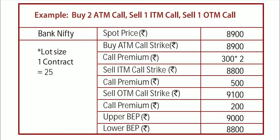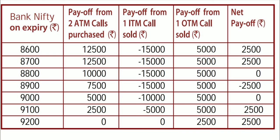Buy 2 ATM calls, sell 1 ITM call, sell 1 OTM call. Spot price: 8900. Buy ATM call at strike price 8900, call premium 300 x 2. Sell ITM call at strike price 8800, call premium 500. Sell OTM call at strike price 9100, call premium 200. Upper BEP: 9000. Lower BEP: 8800.